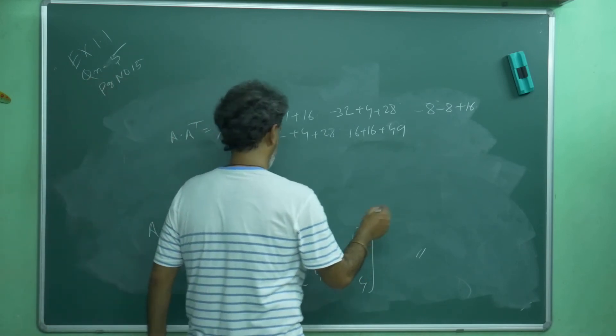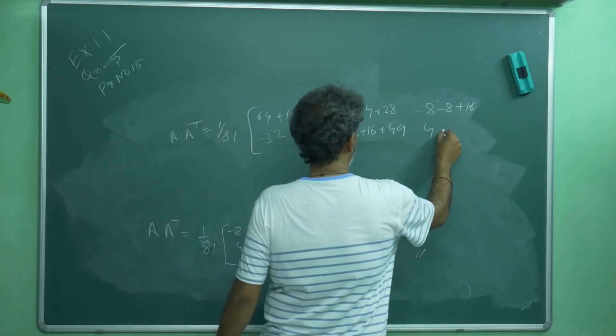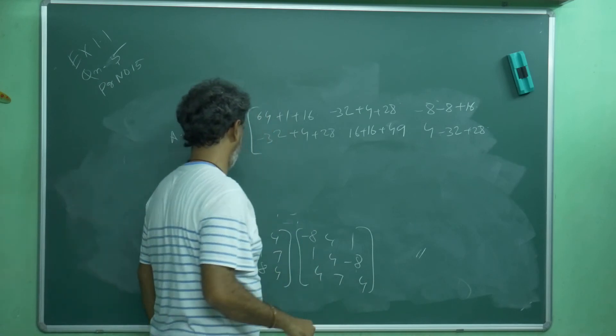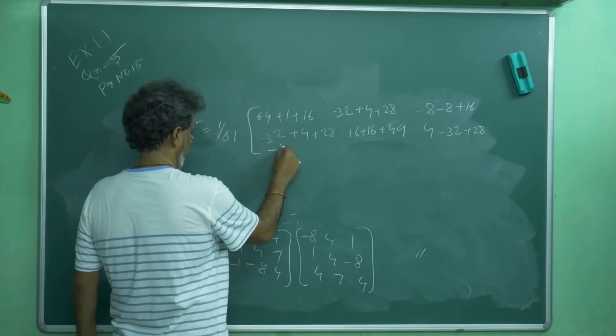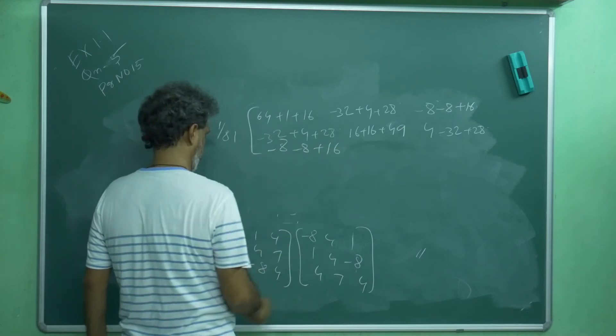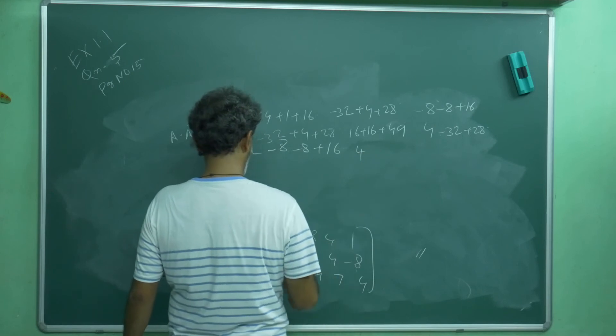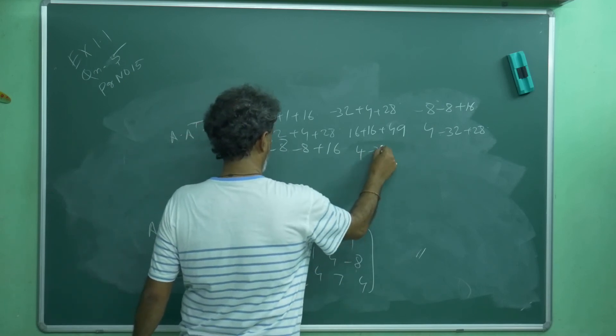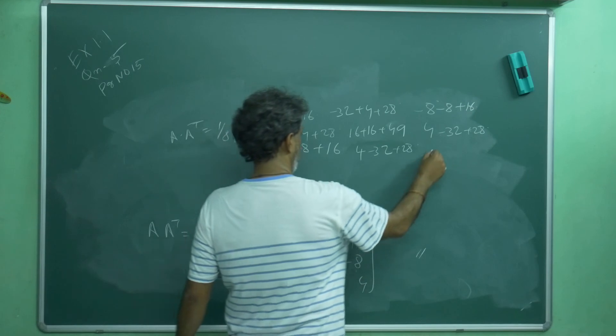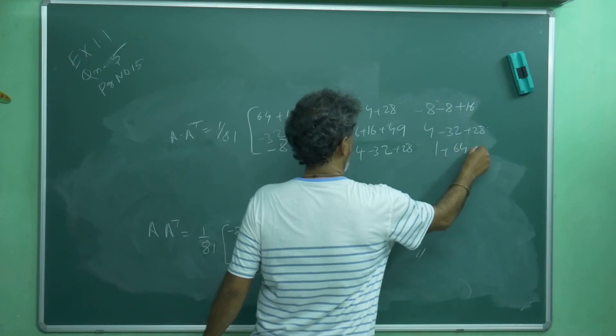I told you, how many times you can do matrix, you will get mistake. 4 into 1. Second row, third column: 4 minus 32 plus 28. Then minus 8, minus 8 plus 16. This is 4 minus 32 plus 28. 1 into 1 is 1 plus 64 plus 16.